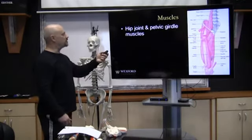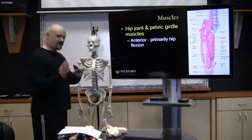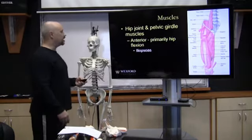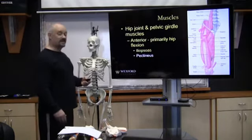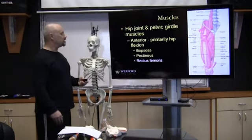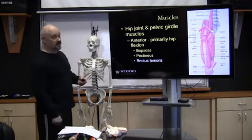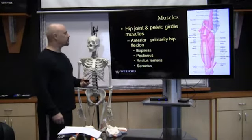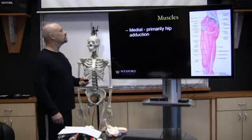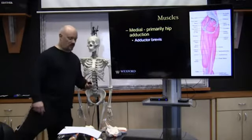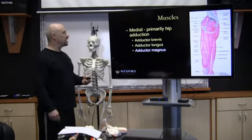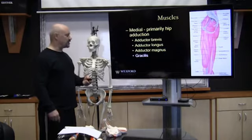Looking at the hip and pelvic girdle muscles: on the anterior side, the primary hip flexion muscles are the iliopsoas, the pectineus, the rectus femoris — one of the quad muscles, because the rectus femoris crosses both the hip and the knee joint — and the sartorius. In the medial compartment, primary hip adduction muscles — pulling the leg toward the midline — are the adductor brevis, adductor longus, adductor magnus, and the gracilis.